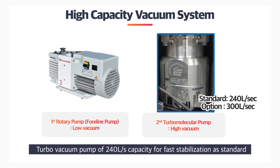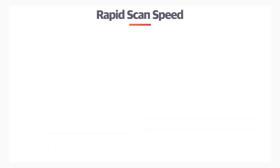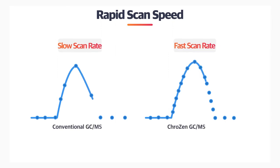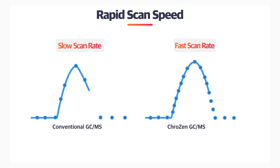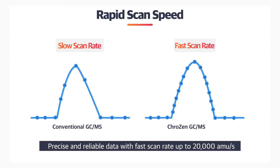Crowzen GC-MS provides a turbo vacuum pump of 2400 liters per second capacity for fast stabilization as standard. It also offers precise and reliable data with a fast scan rate up to 20,000 atomic mass units per second.